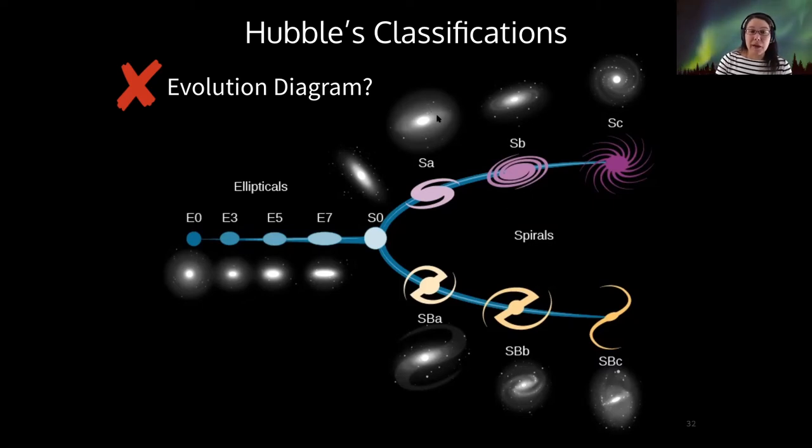For example, a spiral may become a lenticular galaxy over time. That's one example of how galaxies might change due to gas being depleted by star formation. And we'll see that other things can happen to galaxies to change their shape over time as well.